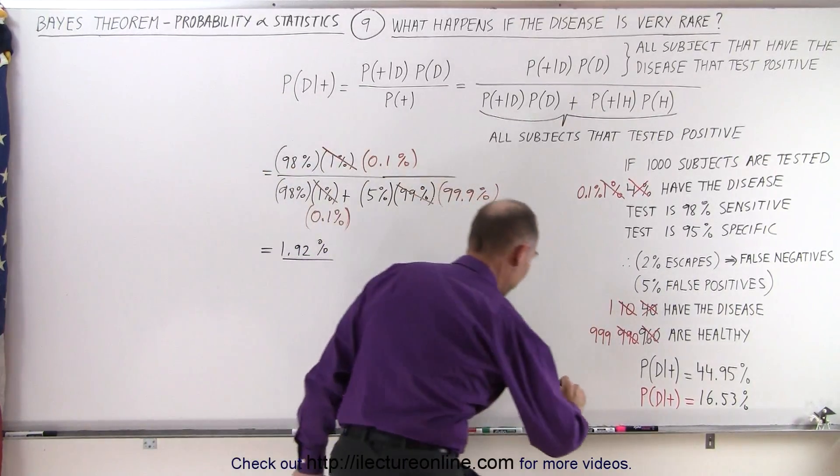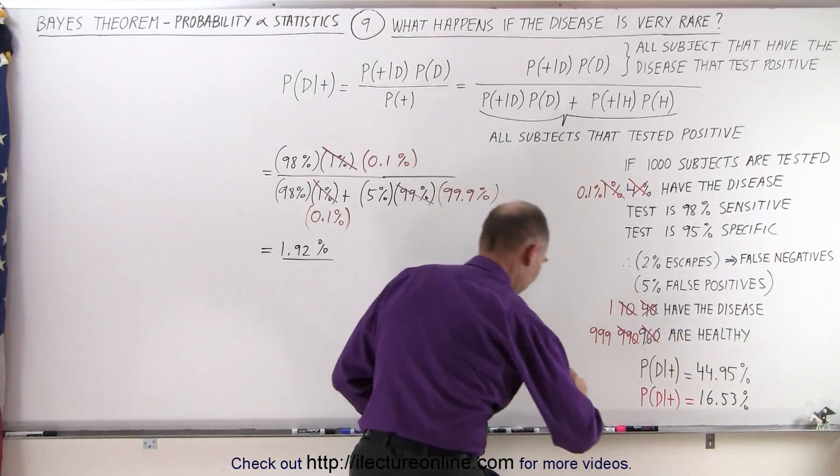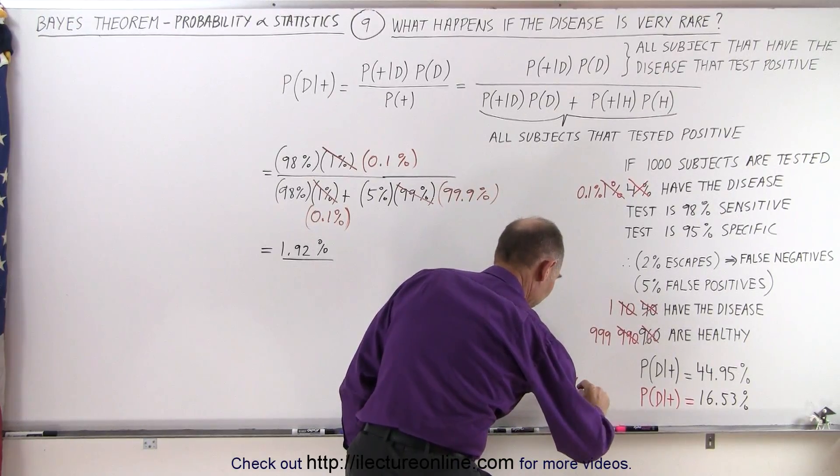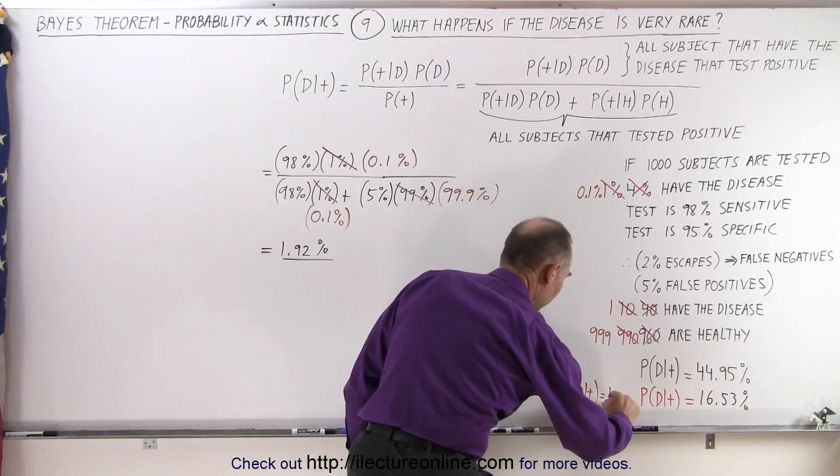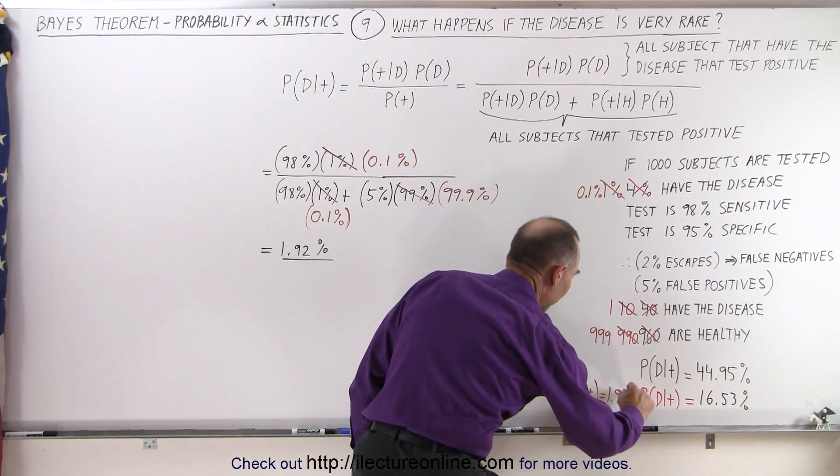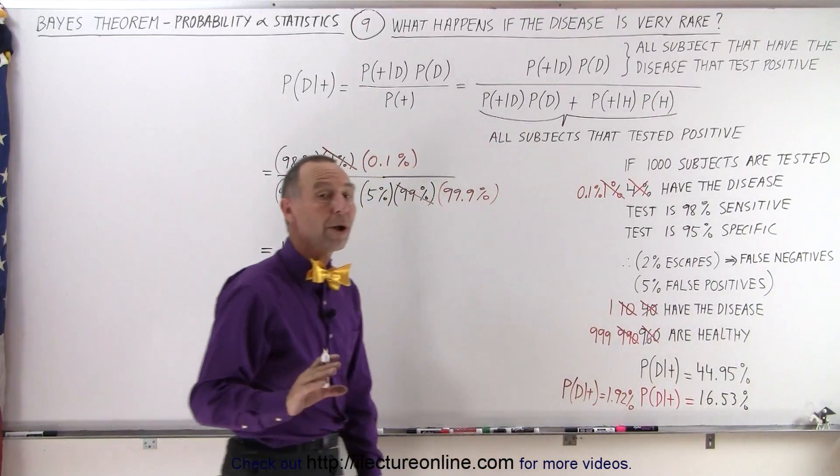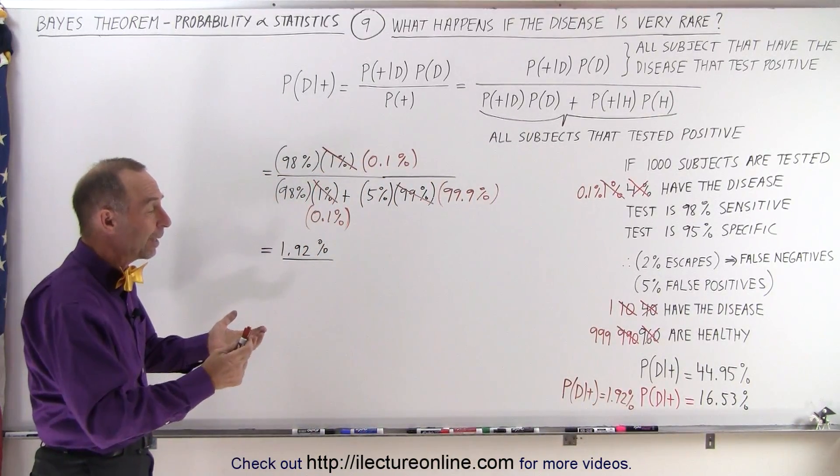So now we are at a probability, and let me use a different color. The probability that the person has a disease when they test positive has now dropped to 1.92%. That's a very low probability.